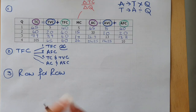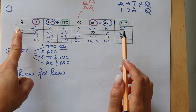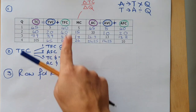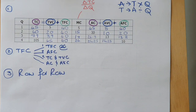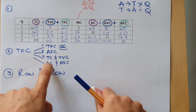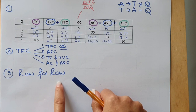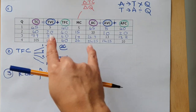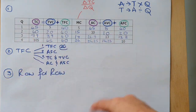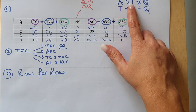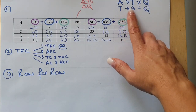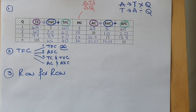So the most important parts are: first, write your formulas and indicate your pairs. Second, always look for Total Fixed Cost first. Third, go row for row. Know your pairs — which ones go together. And remember: if you have an average and need to get a total, multiply by quantity; if you have a total and need an average, divide by quantity.